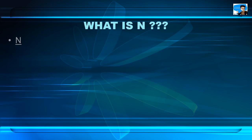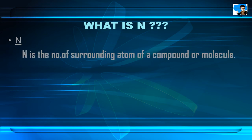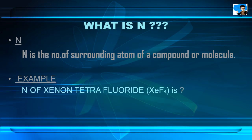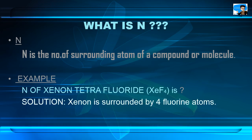You must be curious about the new term n and how it works in the formula. n is defined as the number of surrounding atoms of a compound or molecule. Here is an example to clear doubts regarding the value of n: find the value of n in xenon tetrafluoride (XeF4). Xenon is surrounded by 4 fluorine atoms, therefore the value of n here is 4.